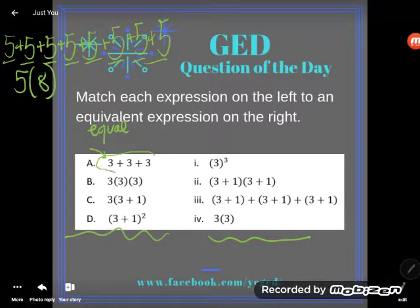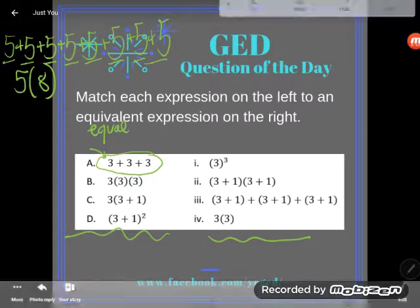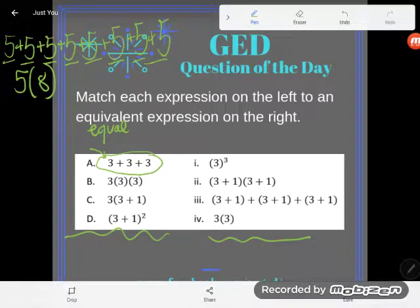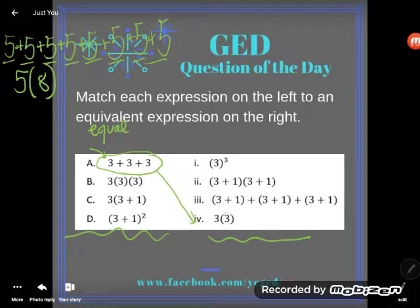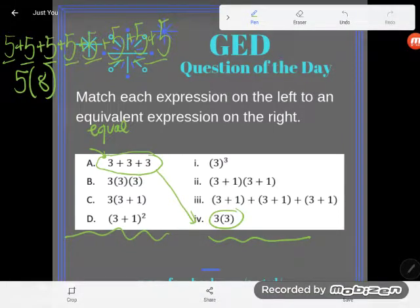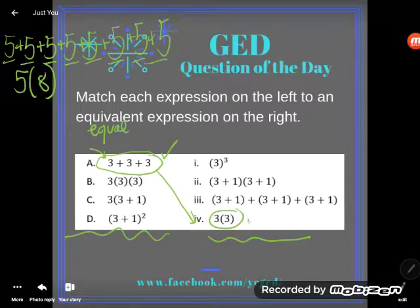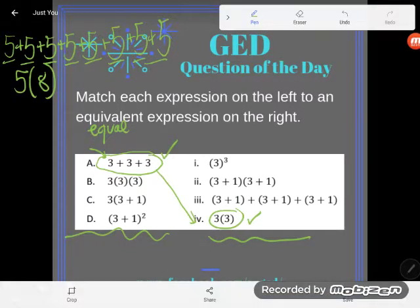Similarly, I have the number three adding three times. So another way to think about 3 + 3 + 3 is 3 × 3. Letter A matches with number four. 3 + 3 + 3 is 9, and 3 × 3 is 9. Even if you weren't sure about repeated addition being the same as multiplication, you could just simplify both and make sure they come out the same, and they do. They both come to 9, so definitely equivalent.